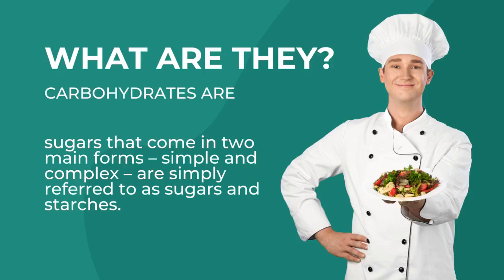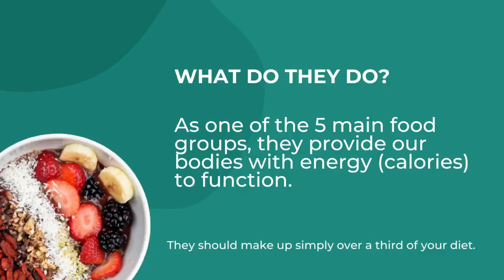They are simply referred to as sugars and starches — that is what carbohydrates are. As one of the five main food groups, they provide our bodies with energy, that is calories, to function. The five main food groups are fats, good fat, protein, carbohydrates, minerals, and vitamins.